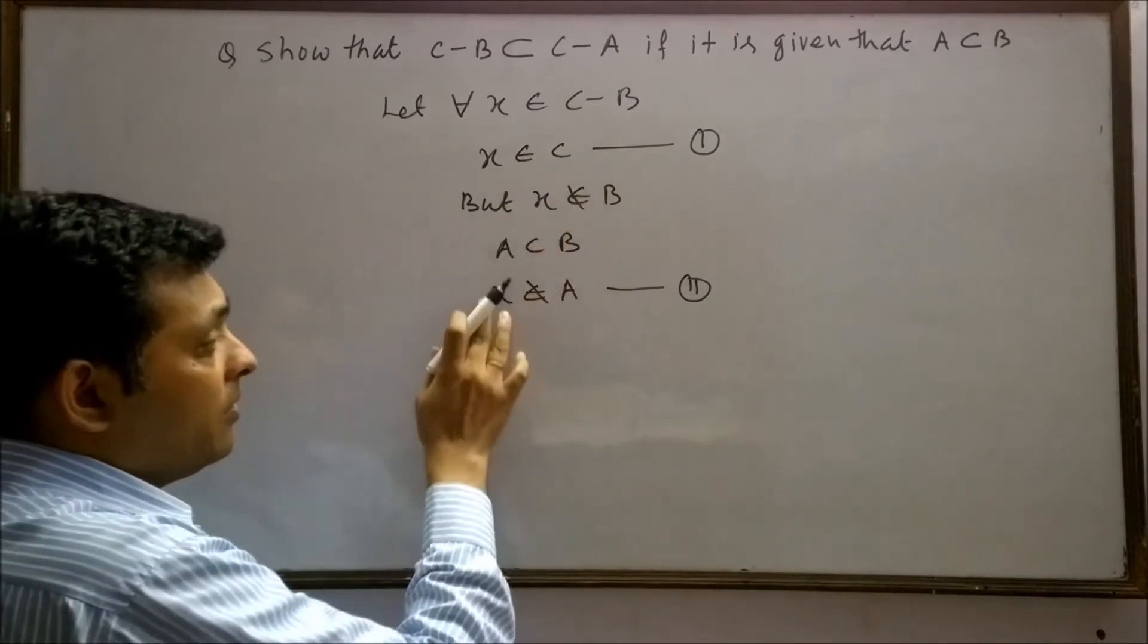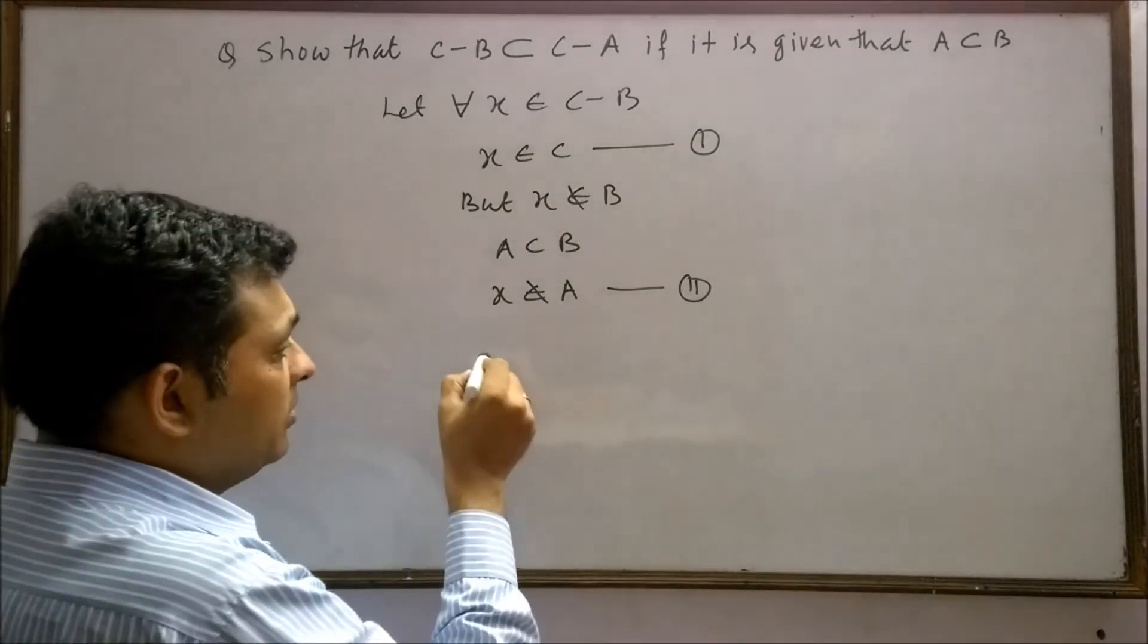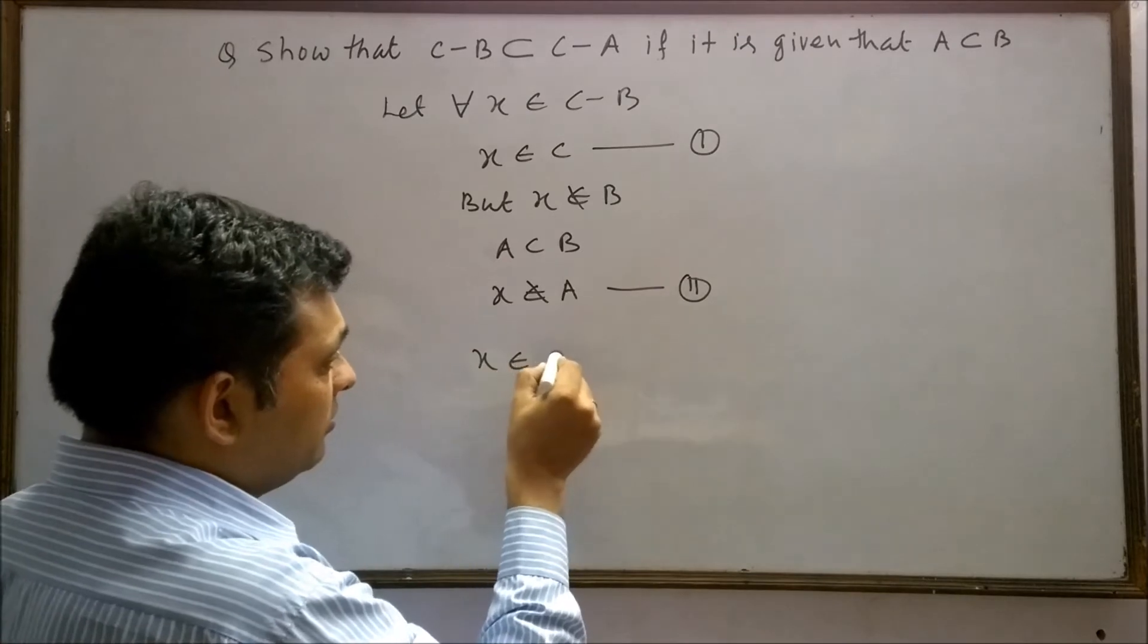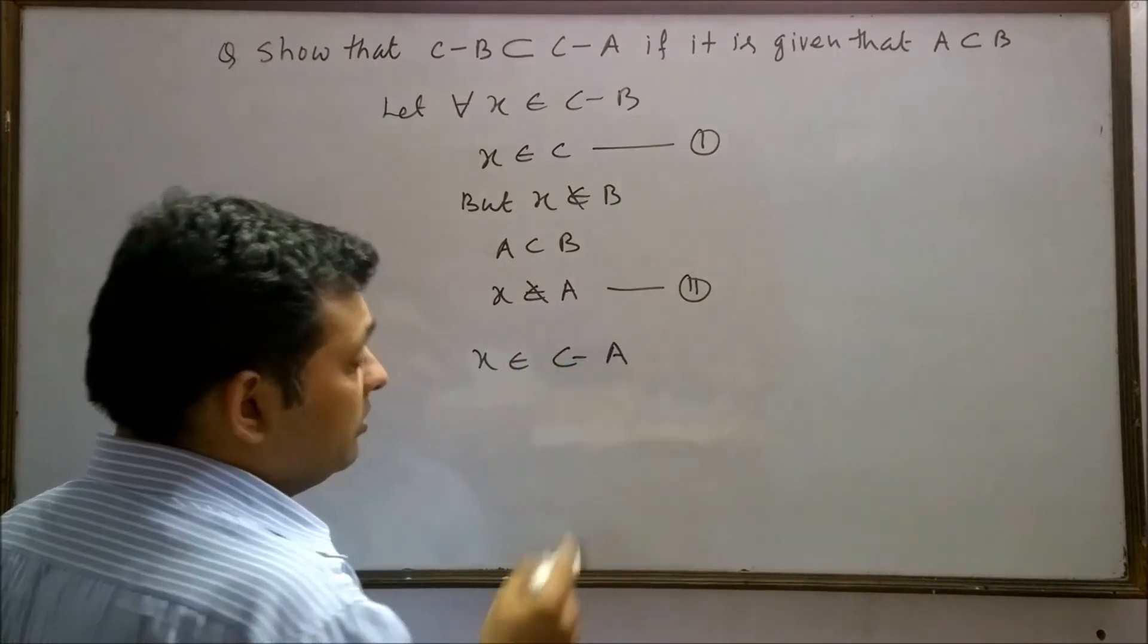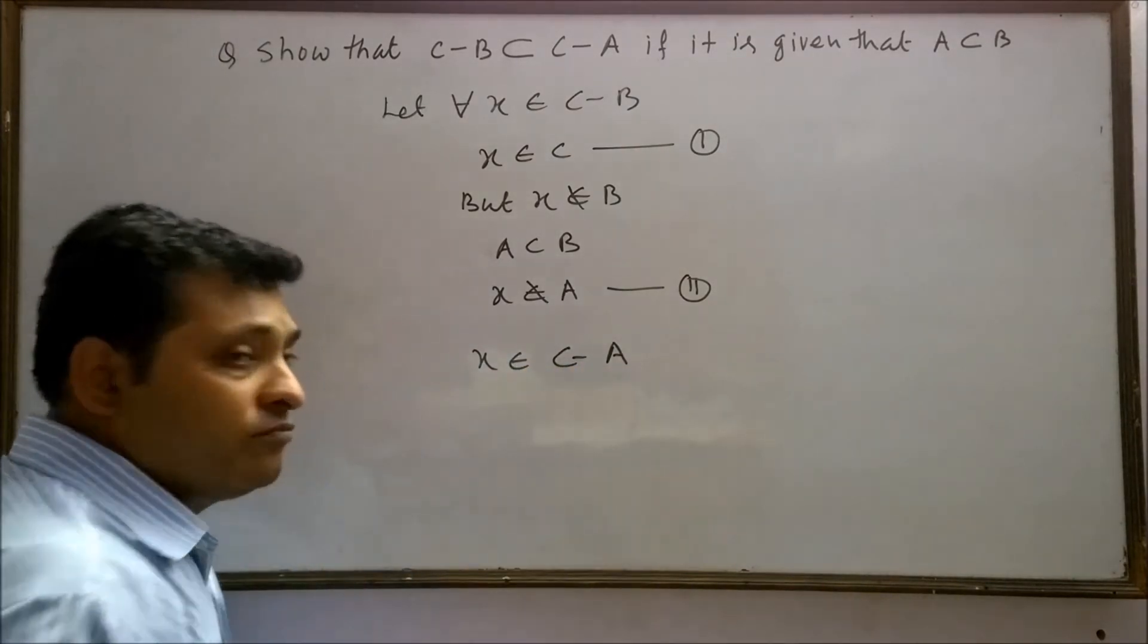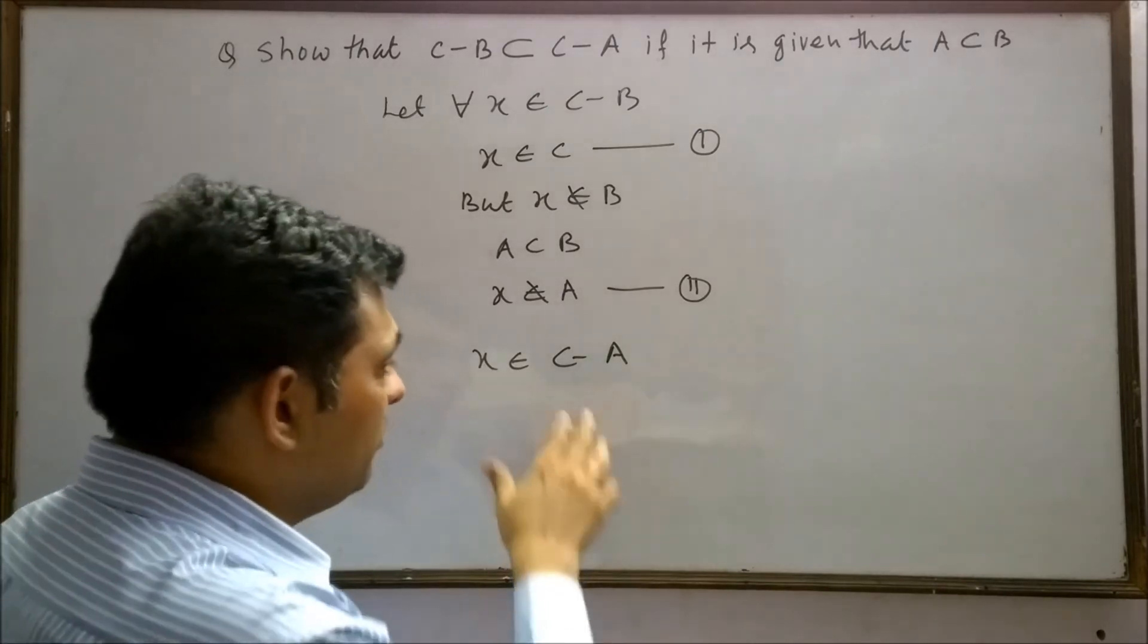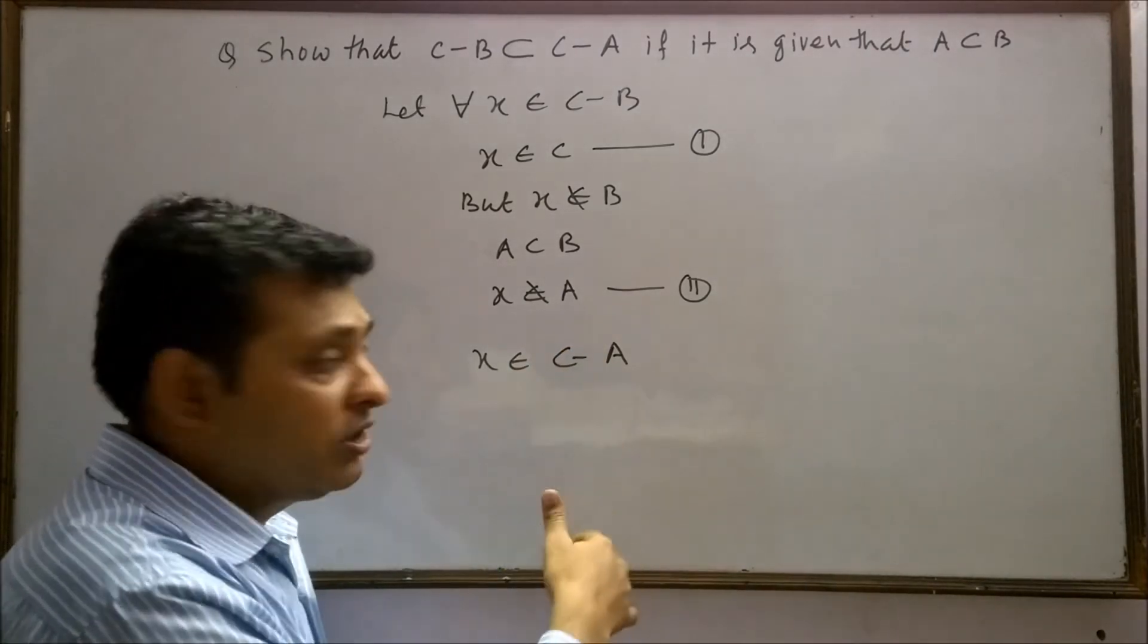x belongs to c and x does not belong to a. It means x further belongs to the set c-a. c-a is a set which contains those elements of set c which do not belong to set a.